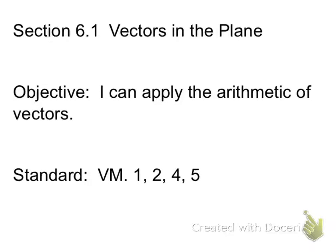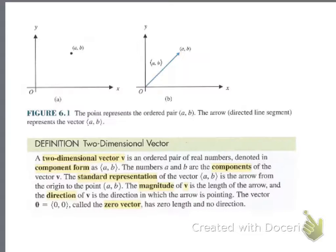Section 6.1 is vectors in the plane. This is going to be a short mini chapter — we're going to talk about vectors and then eventually get into 3D figures. This section is basically just about the basics of vectors. When we talk about what a vector is, this arrow here represents a vector — the vector a, b. Here are all the definitions for a two-dimensional vector, and you can read through those since some of them come up later.